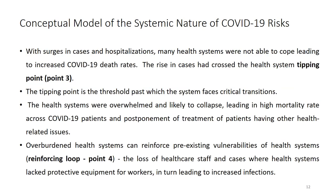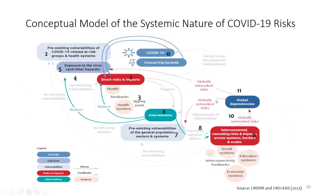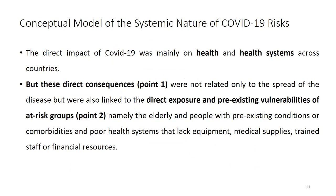Point three is whether the health system can contain the situation — this is the tipping point. Moving to point four: if you have an overburdened health system, it will not be able to face the critical situation. Healthcare staff may be lost, equipment may be lacking. This is the reinforcing loop at point four — it reinforces vulnerability if the existing system cannot cope with the COVID-19 situation.